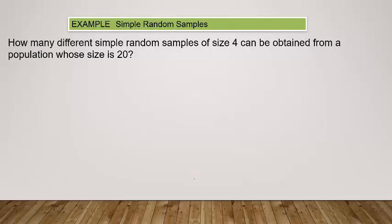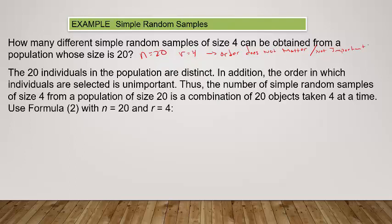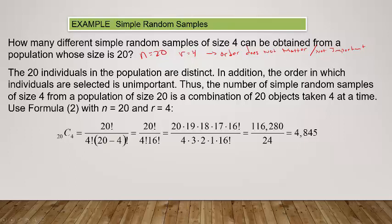How many different simple random samples of size 4 can be obtained from a population whose size is 20? Right off the bat: population size is 20, sample size is 4, so I want to select 4 from 20 — it's an n and r problem. If you're selected first or fourth, order does not matter — you're still in the sample.